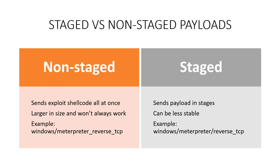The takeaway is: if you have a payload that does not work, maybe try the other type of that payload. If you see something like reverse TCP — which is a reverse shell over a TCP connection — and you try a staged reverse TCP and it's not working, then try a non-staged reverse TCP. If that's not working either, maybe send a bind shell instead of a reverse shell — try bind shell staged and then non-staged. We just keep trying until we find a payload that works.